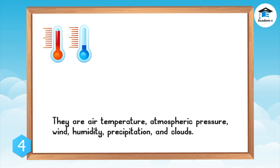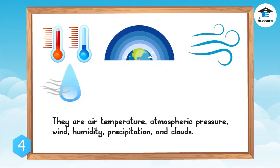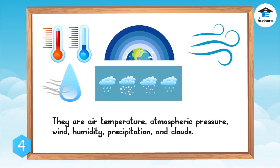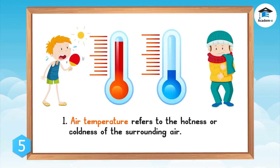There are six main components or parts of weather: air temperature, atmospheric pressure, wind, humidity, precipitation, and clouds. Air temperature refers to the hotness or coldness of the surrounding air.